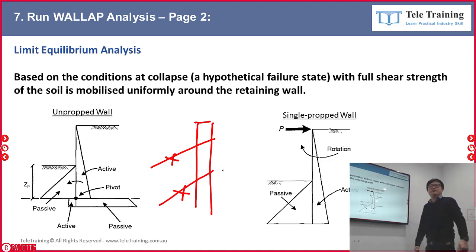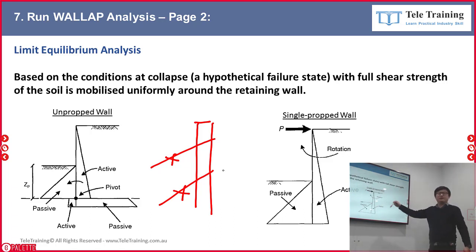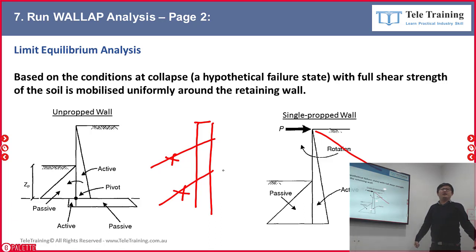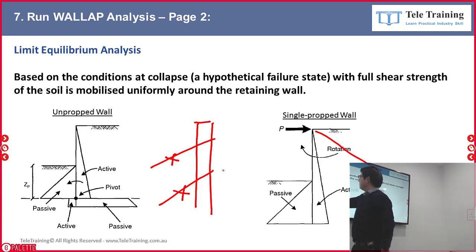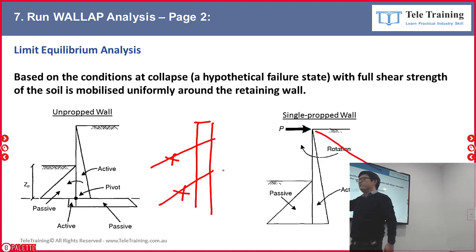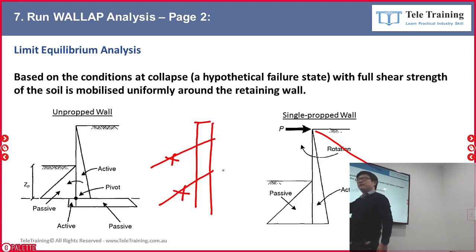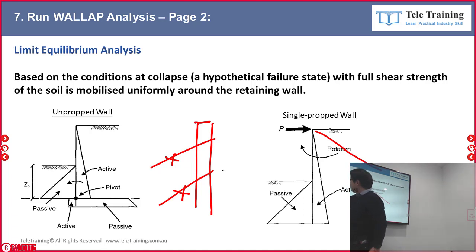If you have two anchors, WALLOP won't run the Limit Equilibrium Analysis. But if you have no anchor or just one anchor, it will run the limit equilibrium analysis for you. It assumes fully active pressure and fully passive pressure down to a certain point called the point of rotation, or pivot point. When the embedment is deep, the wall doesn't always rotate from the very base — rotation reverses at the midpoint, giving you passive, active, and then passive again below.